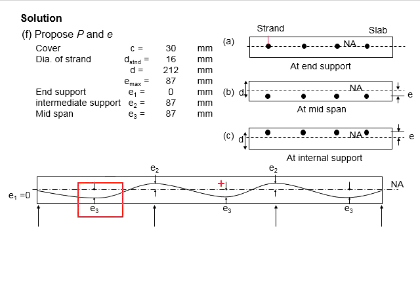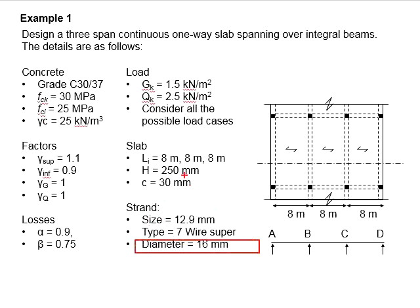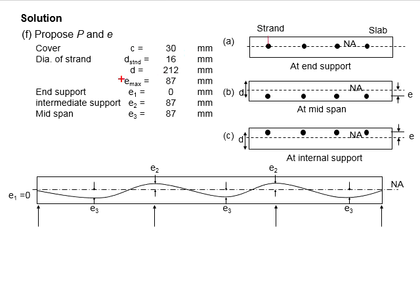There will be positive and negative eccentricity. Given that the concrete cover is 30 and assuming the diameter of the strand is 16, as given in the equation here, the maximum eccentricity we can go is 87 above and below the centroid axis. If converted to D, it will equal 212 millimeters.